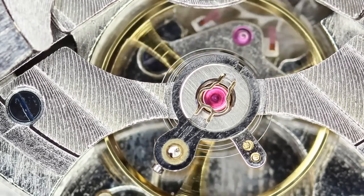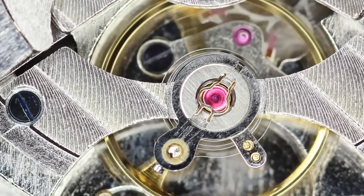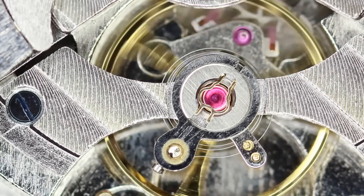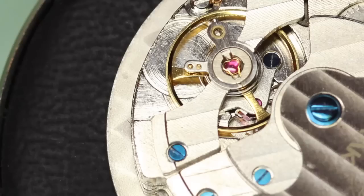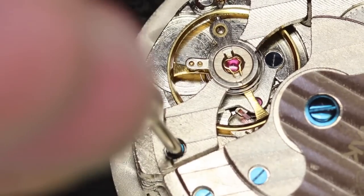Here is a close up of the hairspring as it is bound up. And what we are going to do is remove the balance from the watch.